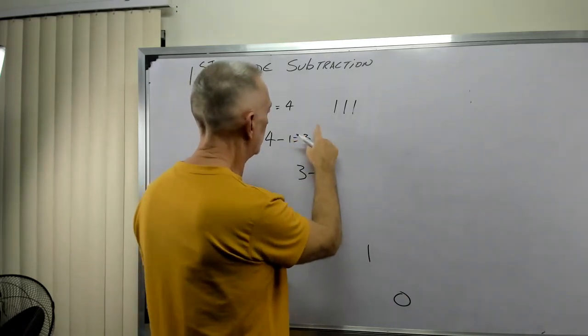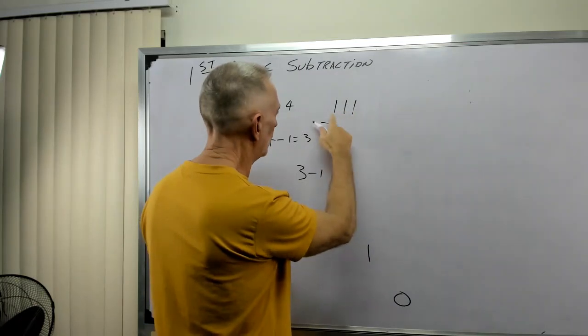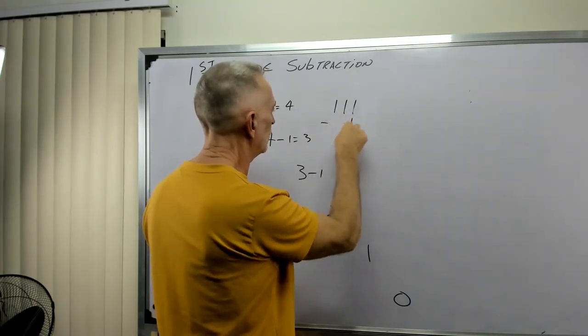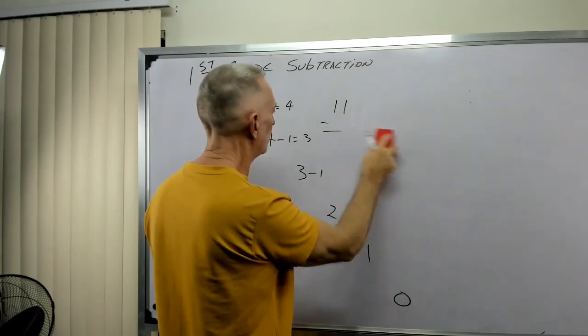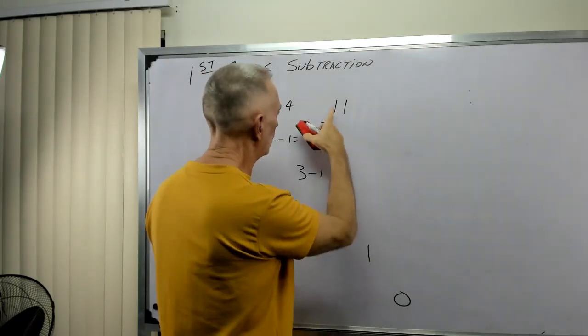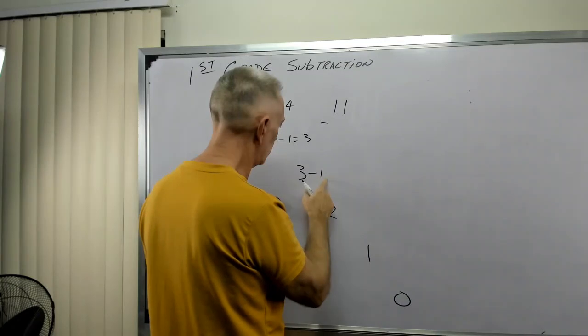Three minus one. So now I have three, one, two, three, minus one. So this one and this one cancel. And I end up with one, two. Three minus one is two.